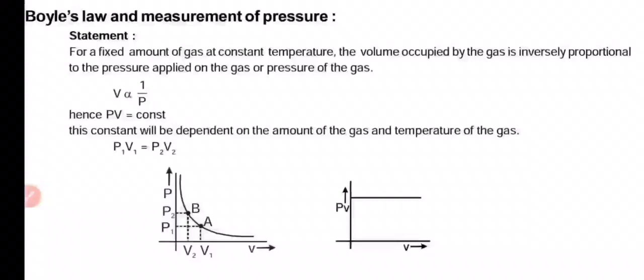Today we are going to start Boyle's law and measurement of pressure. For a fixed amount of gas at constant temperature, the volume occupied by the gas is inversely proportional to the pressure applied on the gas or pressure of the gas.